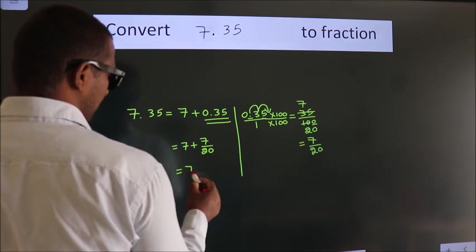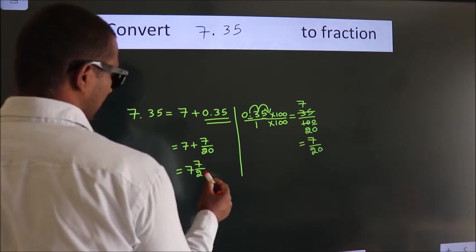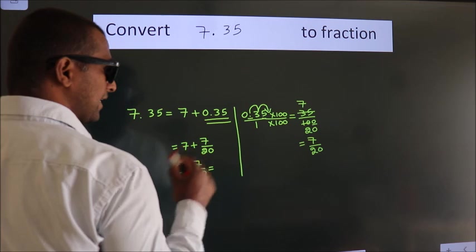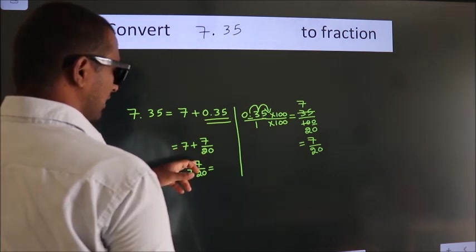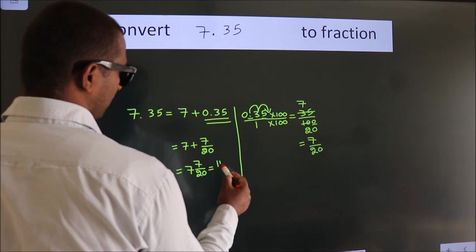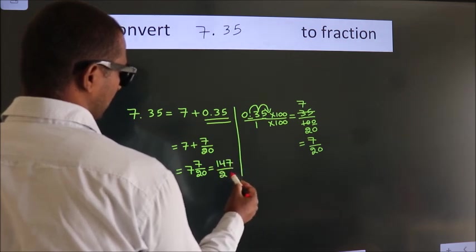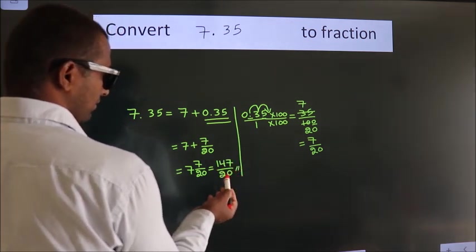In mixed number fraction, it is 7 and 7 over 20. And in improper fraction, it is 7 into 20, which is 140 plus 7, equals 147 by 20. That is our fraction.